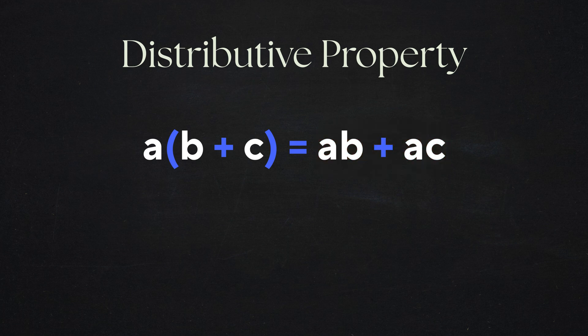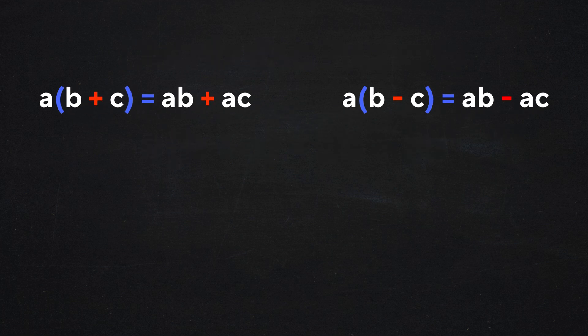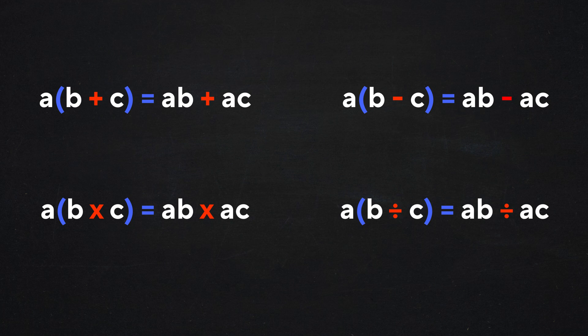And if you're wondering, where is the multiplication? Just remember that multiplication is the default operation. The factor a next to the group indicates multiplication, and when you distribute it to b and c, you're also multiplying each one by a. Although the rule is written with addition inside the parentheses, the distributive property also works for subtraction, because subtraction is simply adding a negative. However, note that the distributive property does not apply when the terms inside the group are being multiplied or divided.